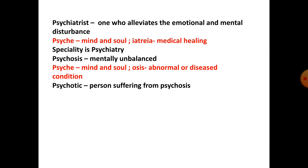Next we have psychiatrist. Psychiatrist kaun hote hain? Jo emotional or mental disturbance — jab kisi vyakti ko ho jaata hai — usko alleviate karte hain, yaani usse kram karte hain. Ab isme do root words use hue hain: psyche, jiska matlab hai mind and soul, and iateria meaning medical healing. Toh mind and soul ki medical healing ke liye hum us doctor ko consult karte hain — woh hai psychiatrist. Aur specialty hai psychiatry.